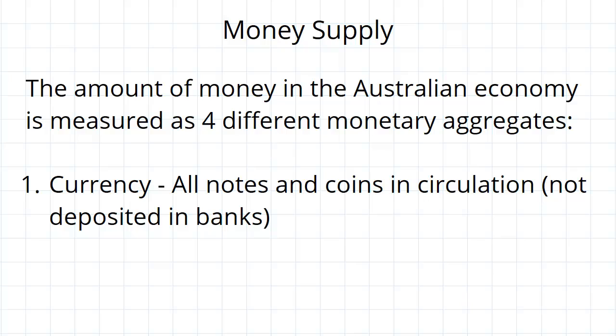The first of these is currency, which is all the notes and coins in circulation. In other words, this is just the cash that people are holding in the private sector. It does not include cash being held in banks — just the cash being held by people and being used in transactions between firms and households.